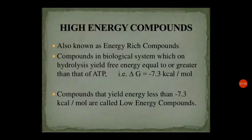The high energy compounds are also known as energy rich compounds. The criteria for deciding a compound to be a high energy compound is that it should yield an energy equal to or greater than ATP on hydrolysis, that is minus 7.3 kilocalorie per mole. If a compound yields an energy less than minus 7.3 kilocalorie per mole, that compound will be considered as a low energy compound.